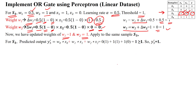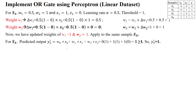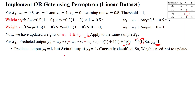Apply updated weights w1=1, w2=1 to sample 3: w0·x0 + w1·x1 + w2·x2 = 0 + 1·1 + 1·0 = 1. Since 1 is greater than or equal to 1, the predicted output is 1. Comparing with the actual output — both are 1, so they match. Sample 3 is correctly classified, and weights need not be updated. Move to sample 4.